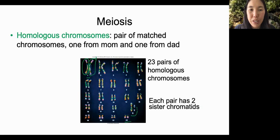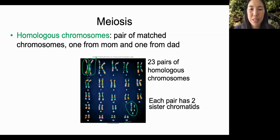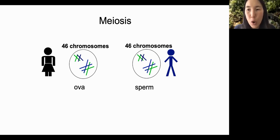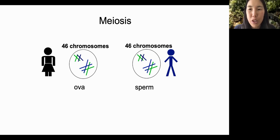The last pair are sex chromosomes, which can be X and Y chromosomes and determine your biological sex. How does mom and dad pass on their DNA to their baby? DNA from a woman's egg, also called ova, combines with DNA from a male sperm to make a new baby.